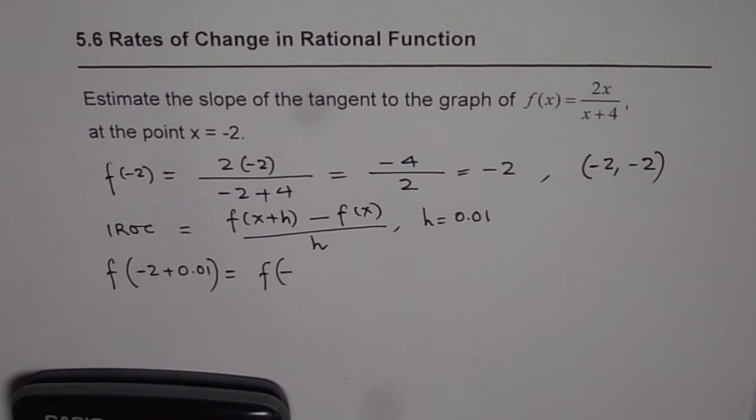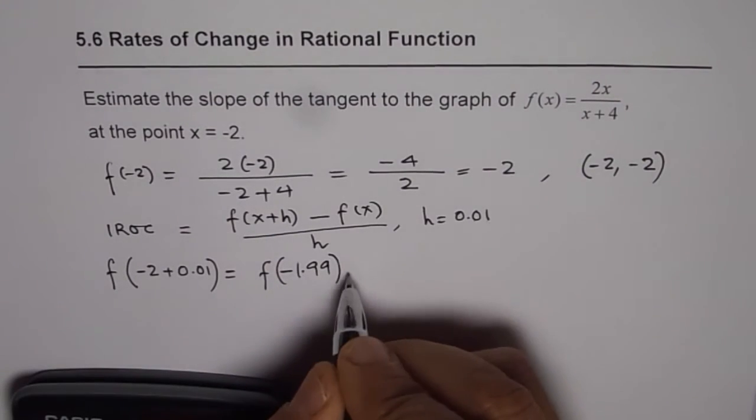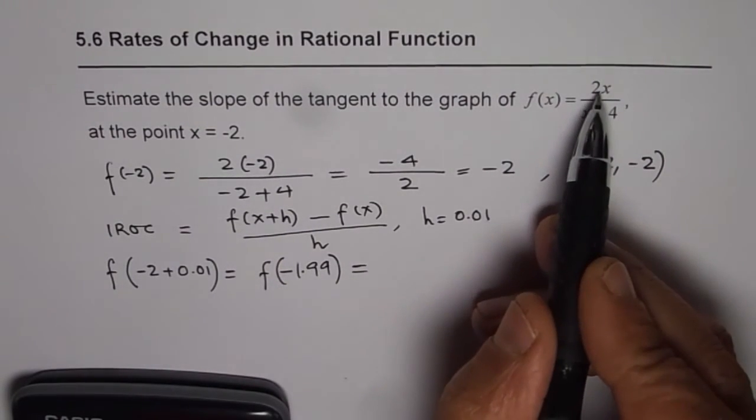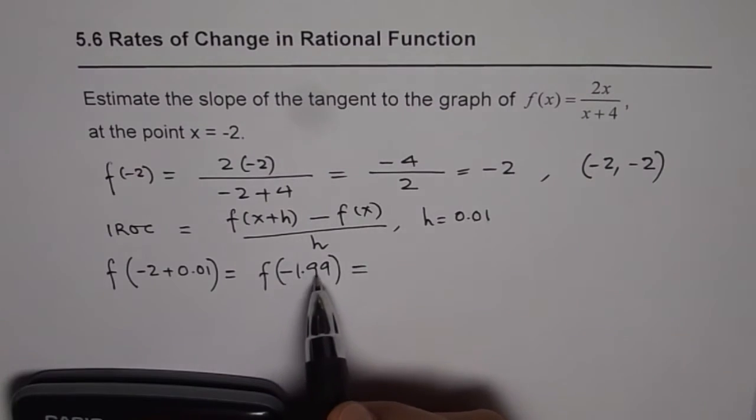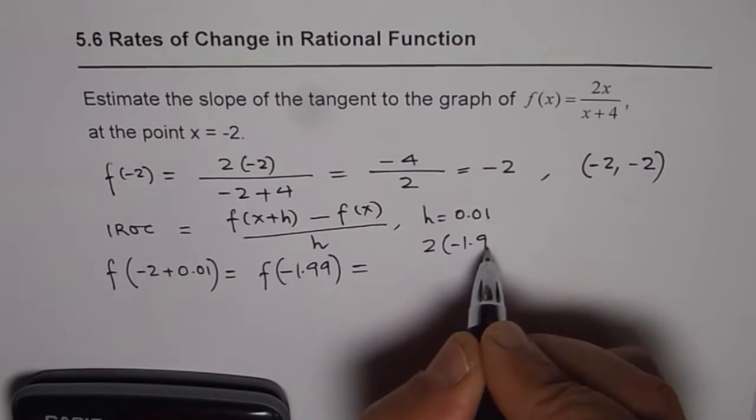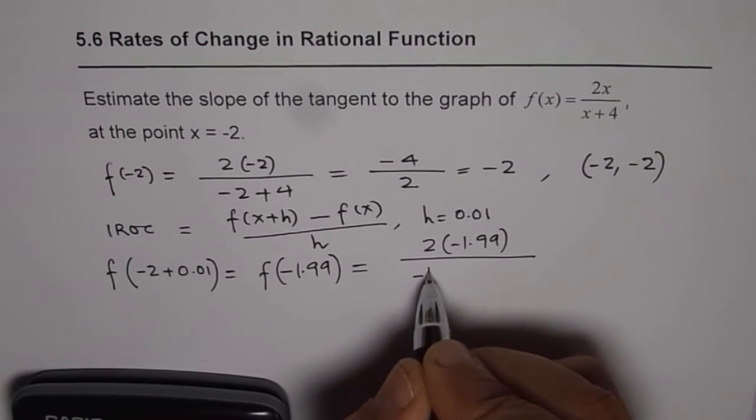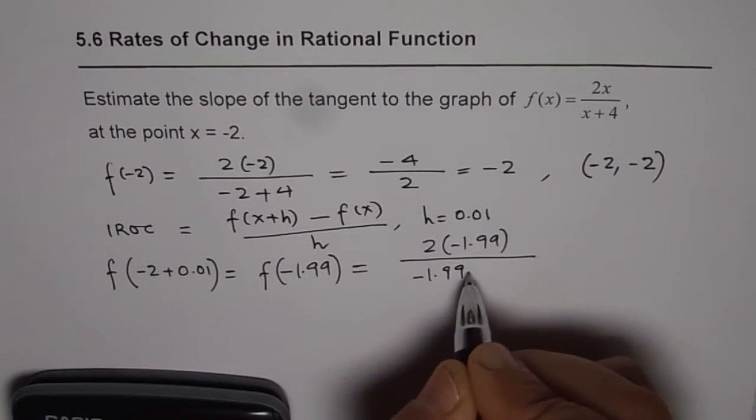We will substitute this value for x and then find the value of the function. So let us replace x with -1.99. So we get 2(-1.99)/(-1.99+4).